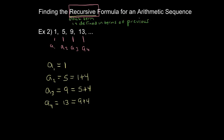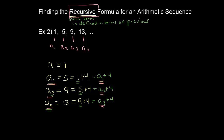What I'm emphasizing here is that every term is the one before it. My second term is my first term plus four. My third term is five, which is my second term plus four. My fourth term is nine plus four, but nine is my third term. So every term is defined in terms of the one before it. My second term is defined in terms of my first, my third in terms of my second, my fourth in terms of my third, and so on.